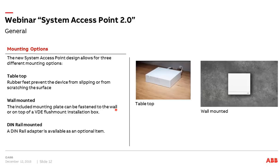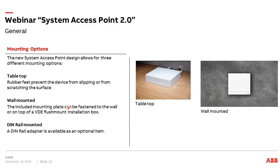The second option is wall mounted — on a wall or on top of a VDE flush-mounted installation box. And the third is DIN rail mounted — for this you need to buy an additional item, the DIN rail adapter. Please keep in mind that the version shown is not the final one — the final version will be in black. But it is very easy to use: you clamp it on the DIN rail and put the system access point on it.